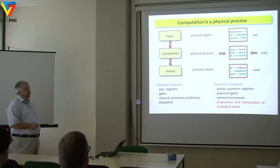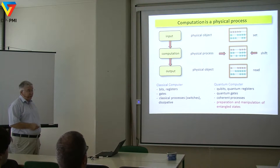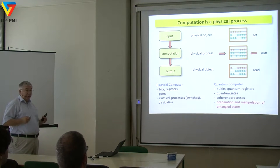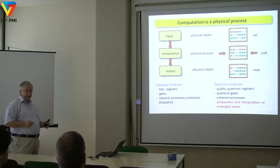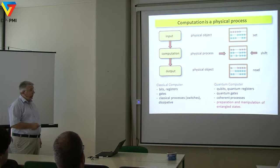Remember: computation is always a physical process. You have to set the initial conditions, operate these things, and read the final outcome — no matter whether you do this in your head, on paper, or with an abacus. These are physical processes. In classical computers, these are bits, registers, and gates. Classical processes are just switches and are usually of a dissipative nature.